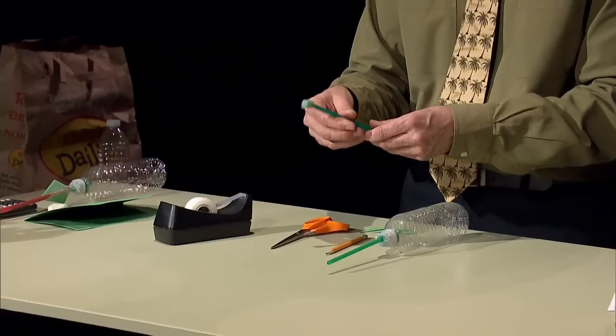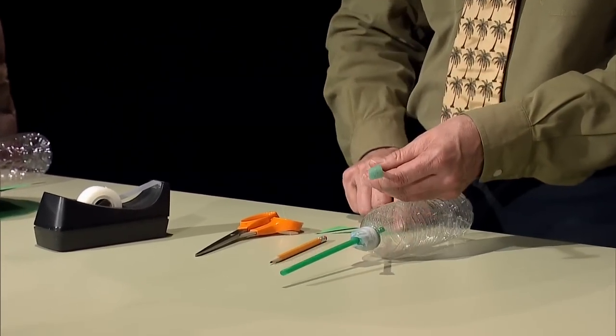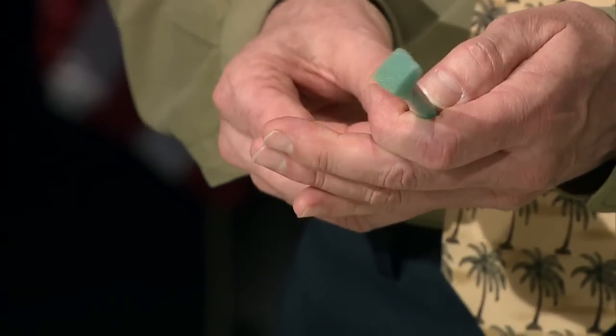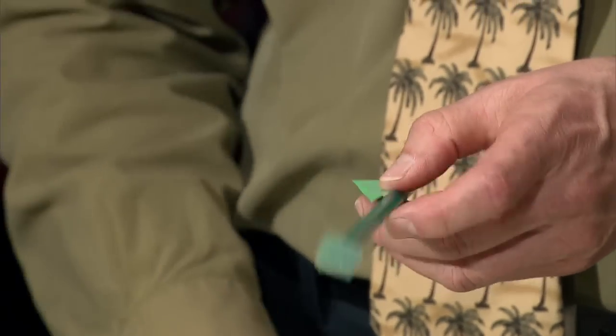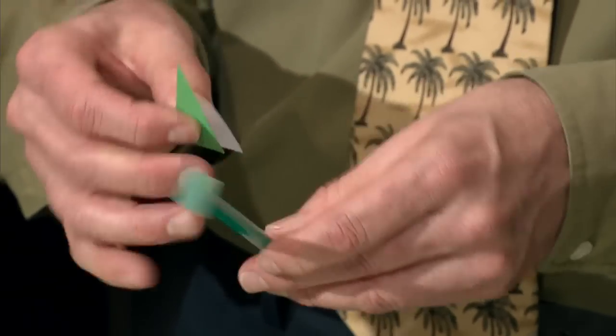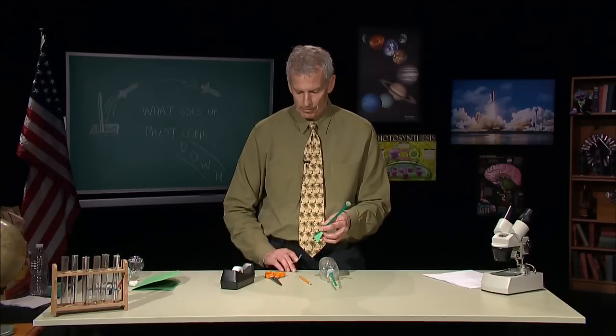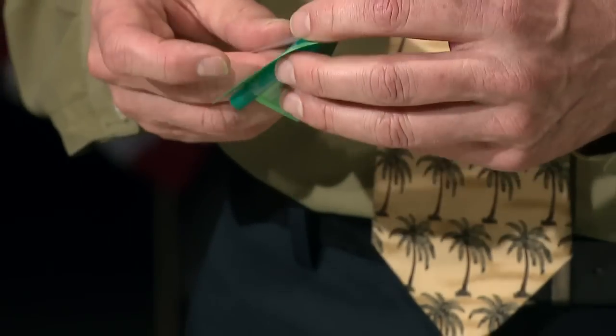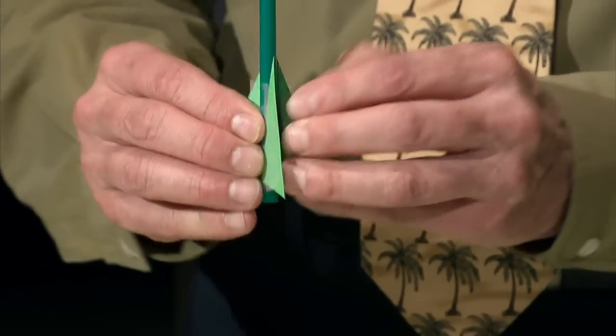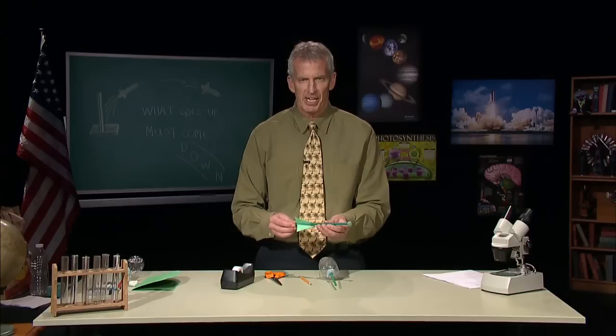Now before we slide this onto the rocket launcher we want to apply the fins, so just a quick piece of tape on each fin. Spread them around a little bit. Part of the fun of making this rocket is making it just the way you want to, but that works pretty good.